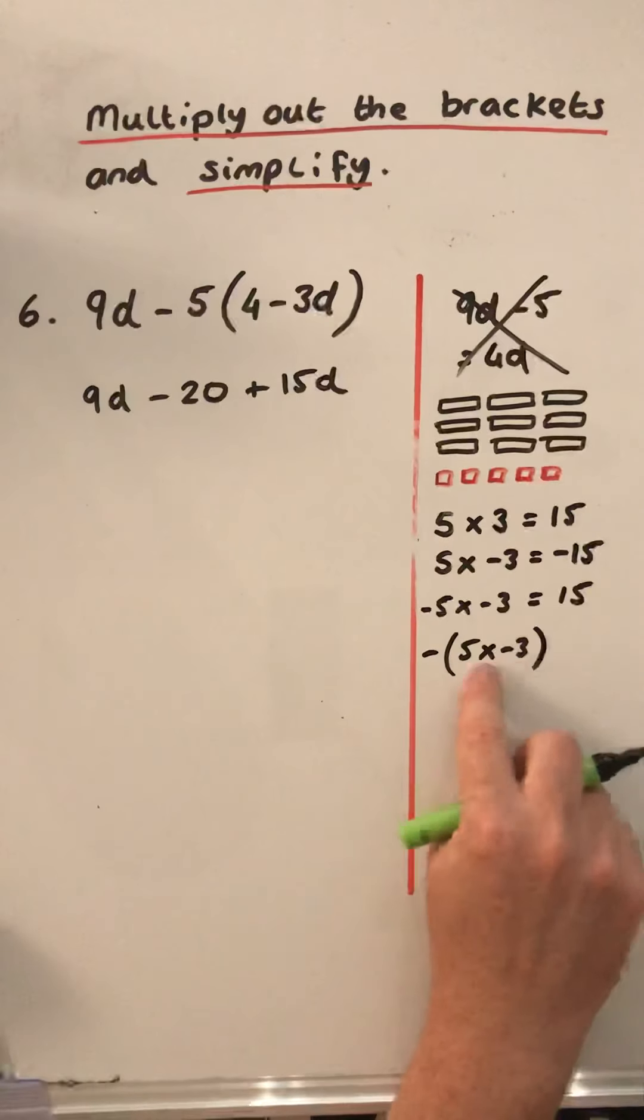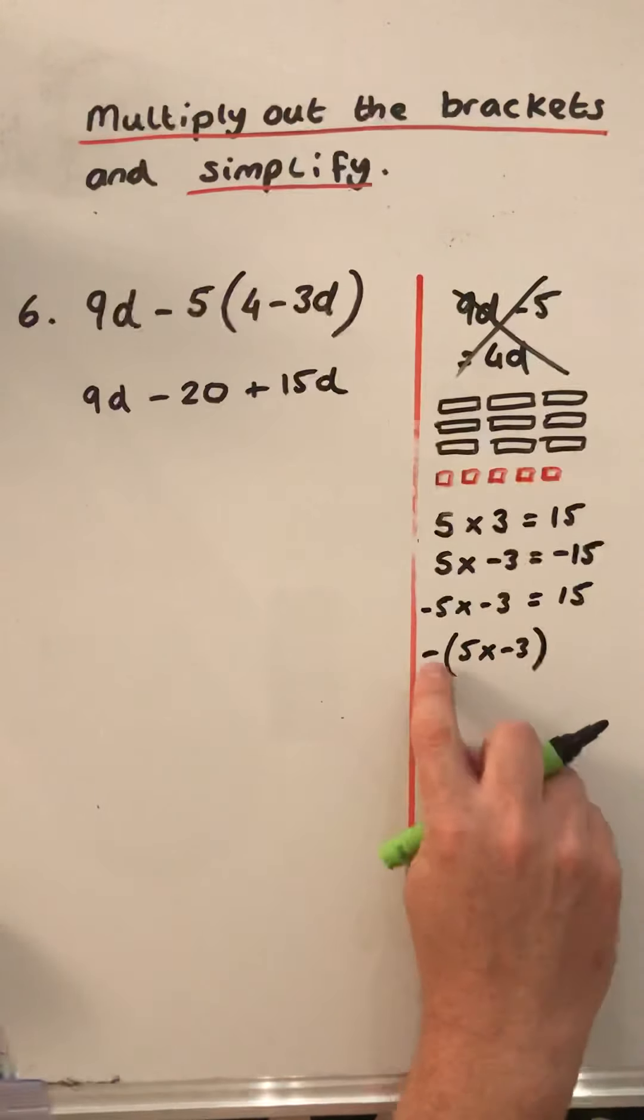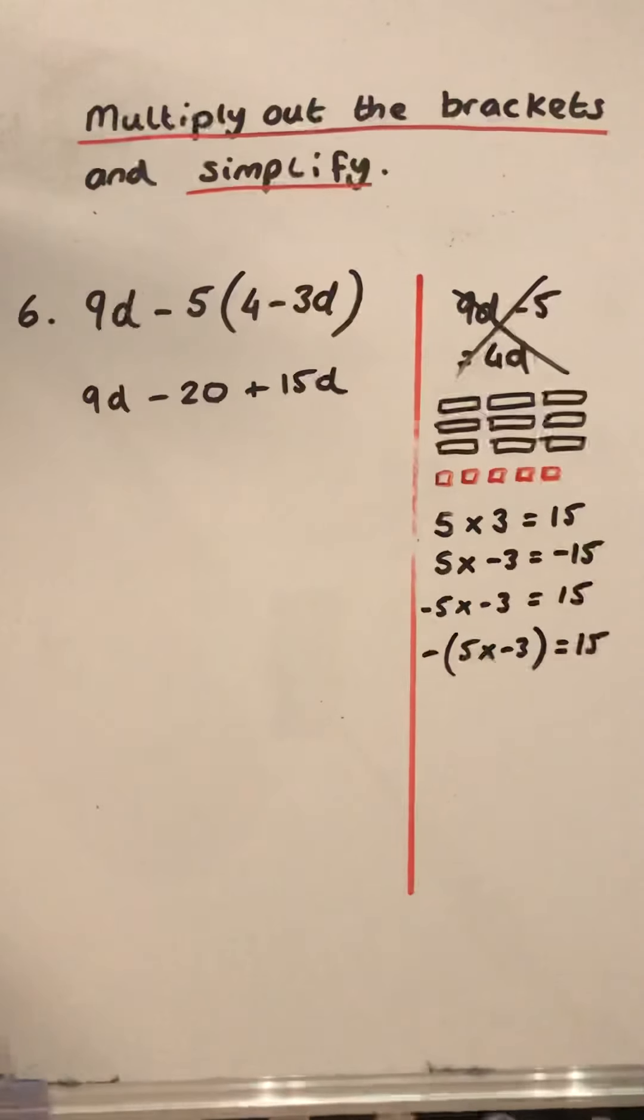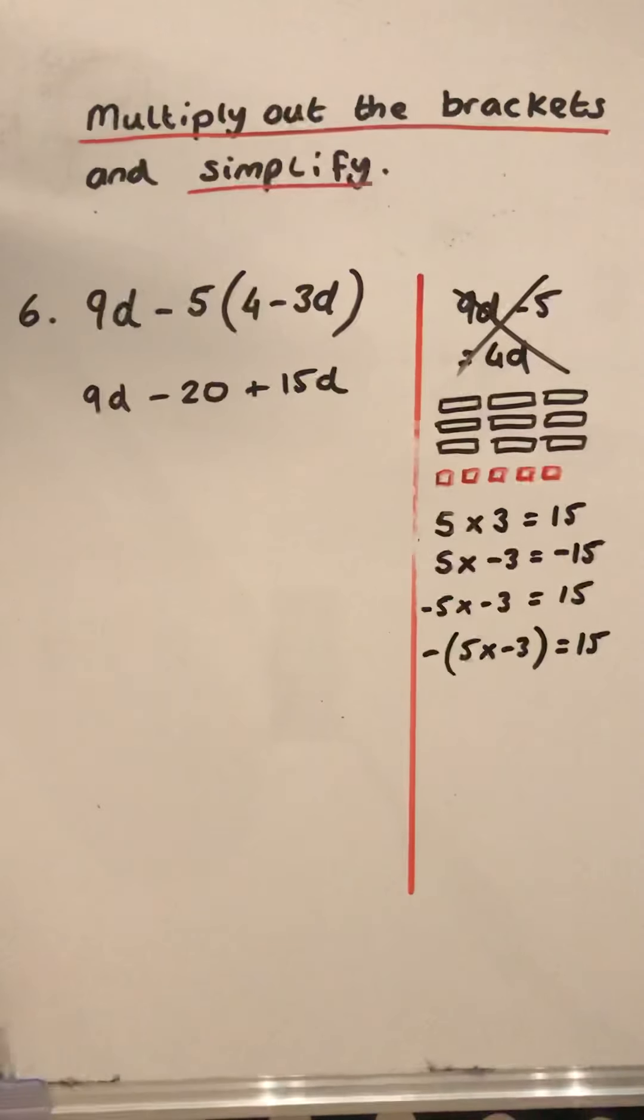So it's 5 times negative 3, which is negative 15. And the negative of negative 15 is positive 15.